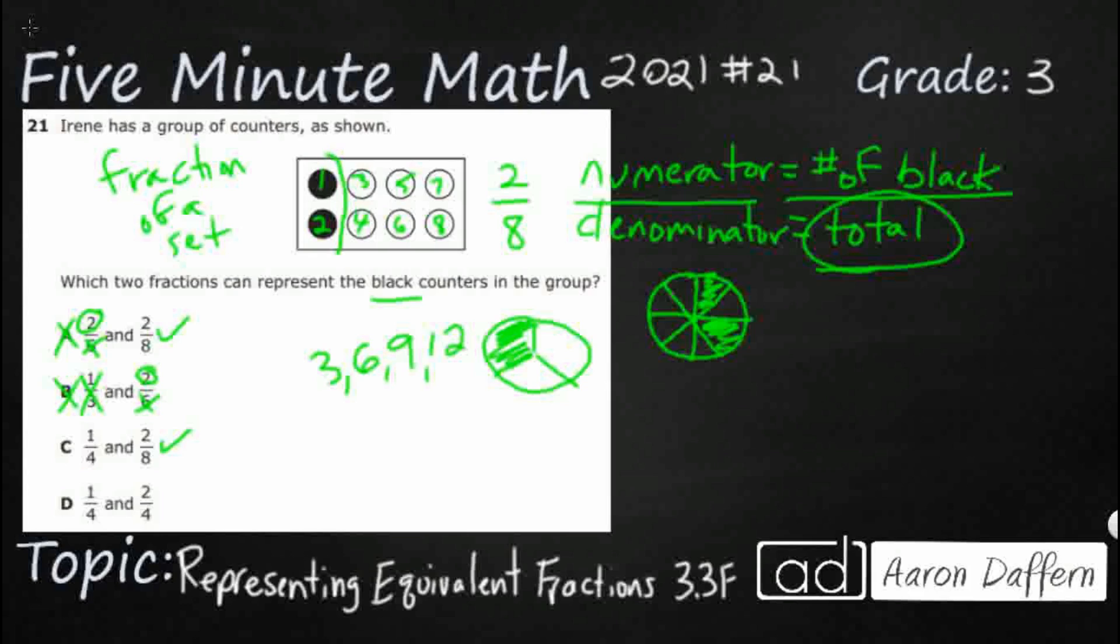So take a look at this one, two, three, four. So I've got four equal pieces. Now, each of my pieces happens to have two counters in them, but I've got four equal sets of two. And how many of those sets of two has the black counters?